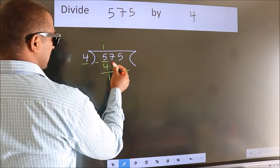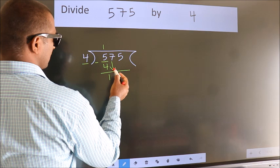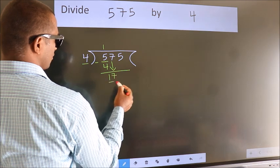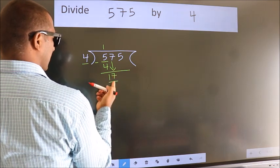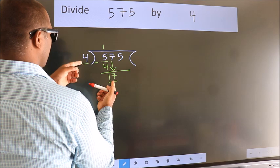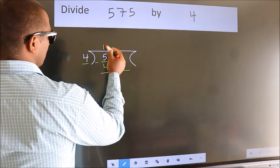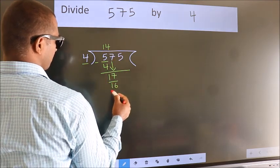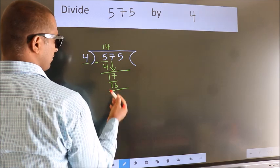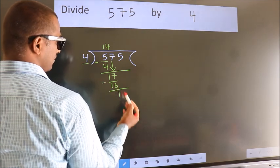After this, bring down the beside number. So, 7 down, making 17. A number close to 17 in the 4 table is 16, four times 4. Now we subtract. We get 1.